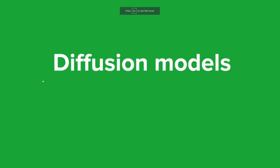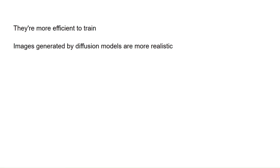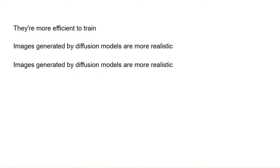This approach has quite a few benefits — diffusion models are more efficient to train, the images they generate are more realistic, and it's easier to control the generated images. For example, if you want the dog to be a specific color, you can just include that in your text prompt. Overall, text-to-image AI models have come a long way in recent years, and with the advent of diffusion models, they're able to generate more realistic-looking images than ever before.